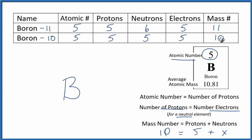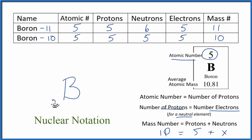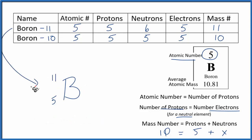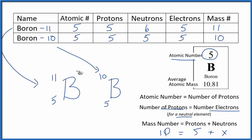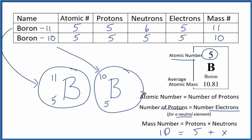Sometimes isotopes are written in nuclear notation. For boron-11, we place the atomic number — 5 — at the lower left and the mass number — 11 — at the upper left of the element symbol. For boron-10, the atomic number stays 5 but the mass number is 10. These are the two primary isotopes of boron.